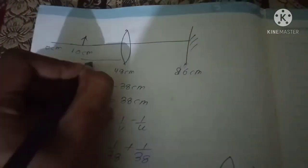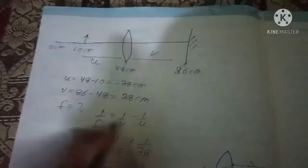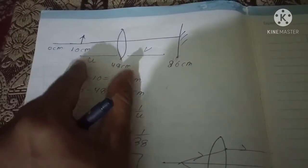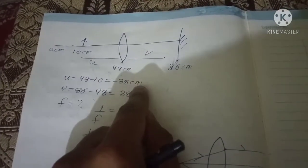So this is our U, this is our V. So U is 48 minus 10. These are the markings. So what is the distance between candle and lens? 48 minus 10, that is minus 38 centimeter.